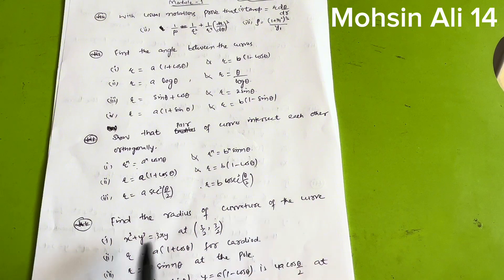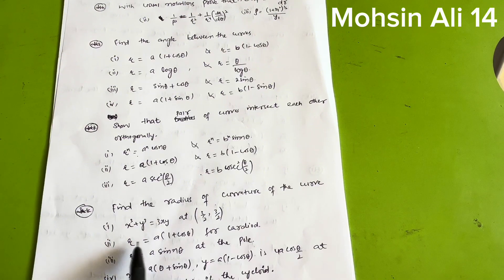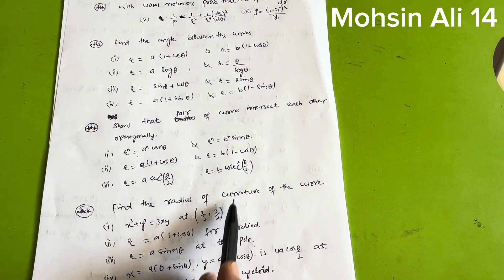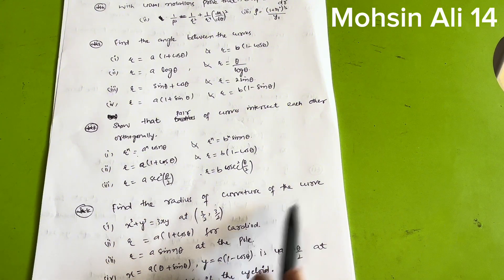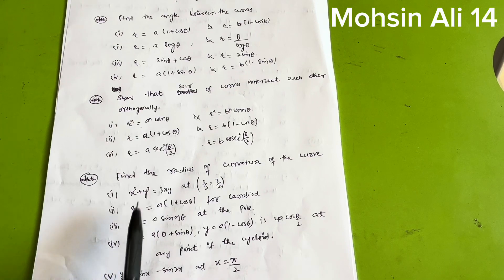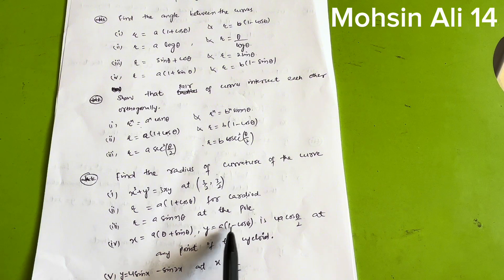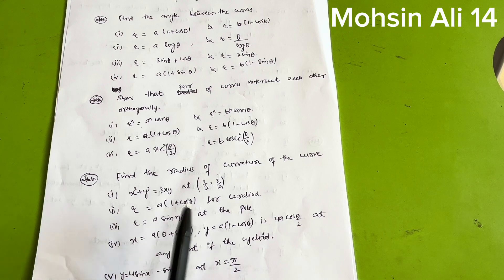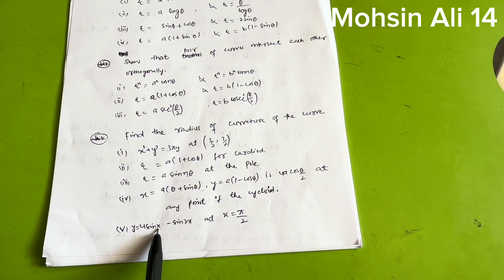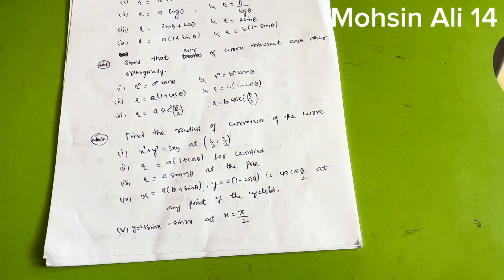For radius of curvature, practice these varieties: find the radius of curvature of x³ + y³ = 3xy at the point (3/2, 3/2); find the radius of curvature of r = a(1 + cosθ) and r = a·sinθ at the pole; find the radius of curvature of the cycloid x = a(θ + sinθ), y = a(1 − cosθ) — the answer is 4a·cos(θ/2); and y = 4sinx − sin2x at x = π/2.